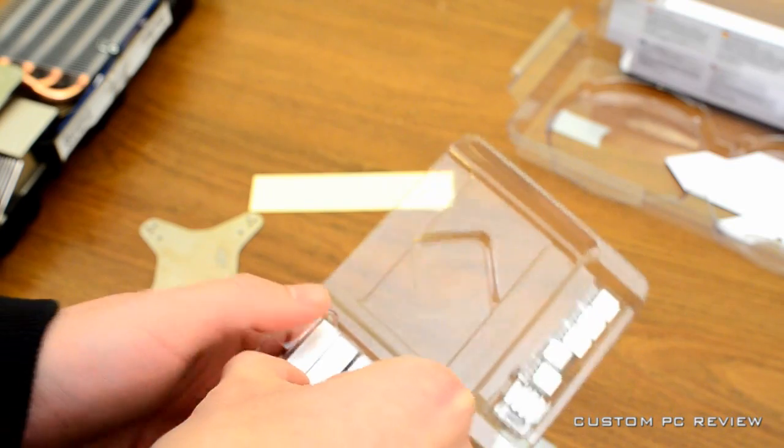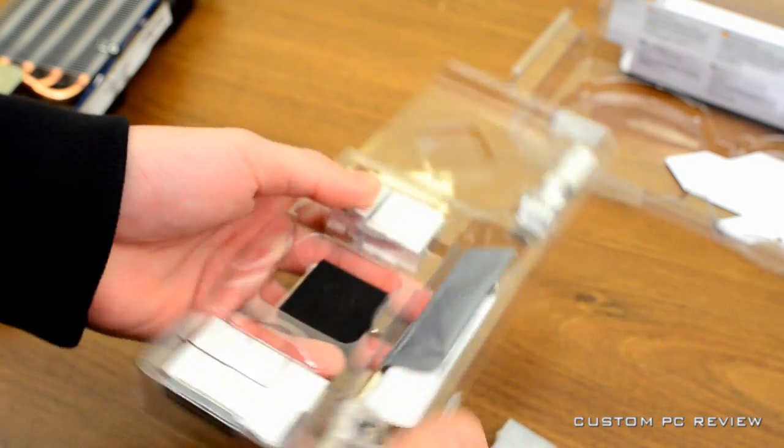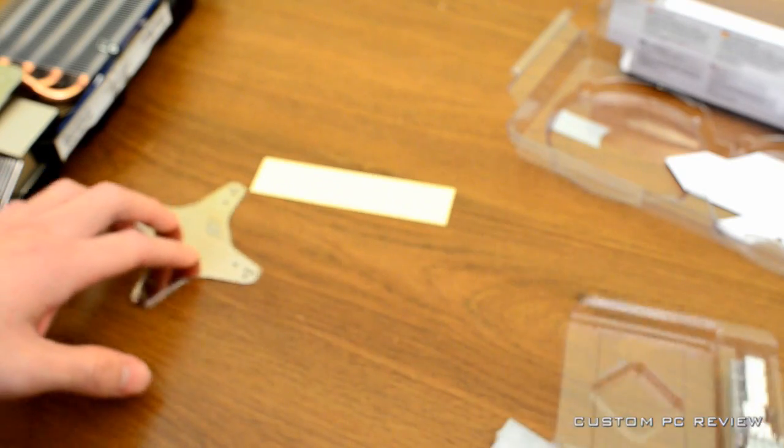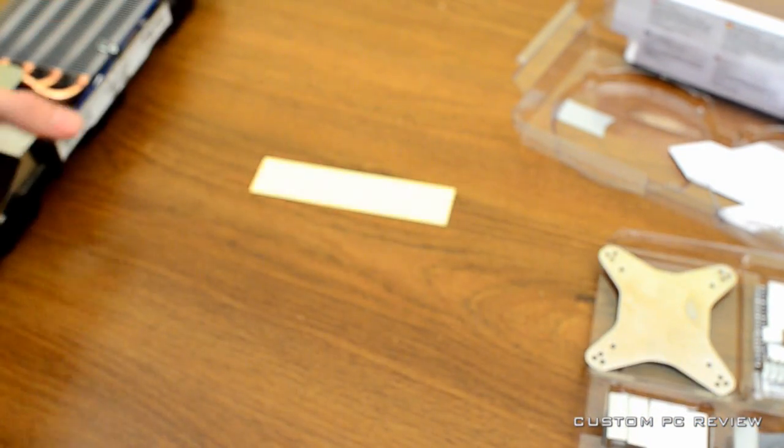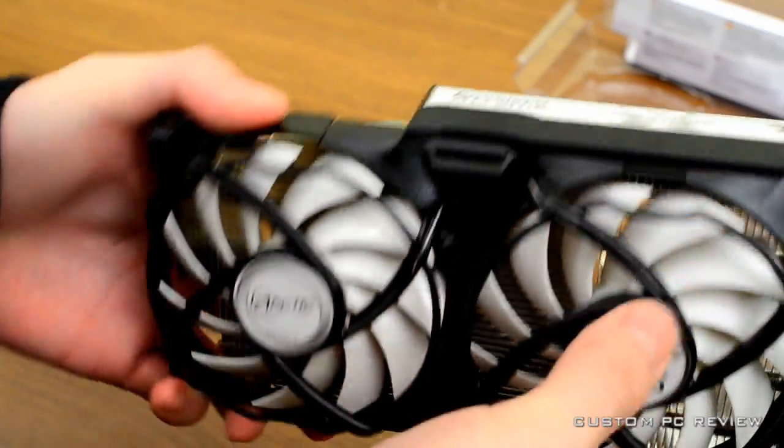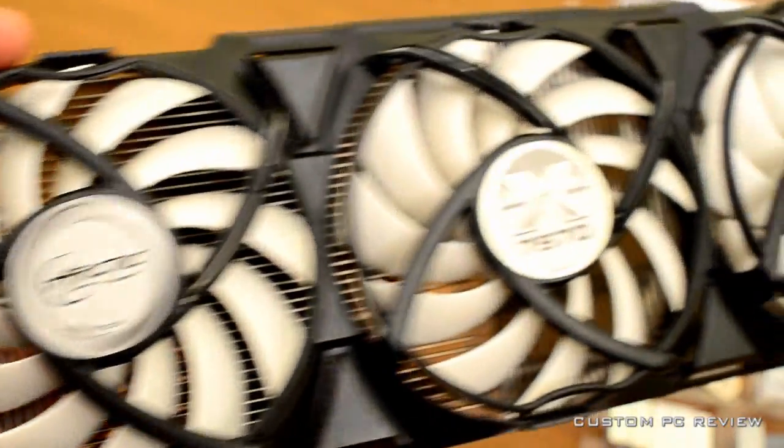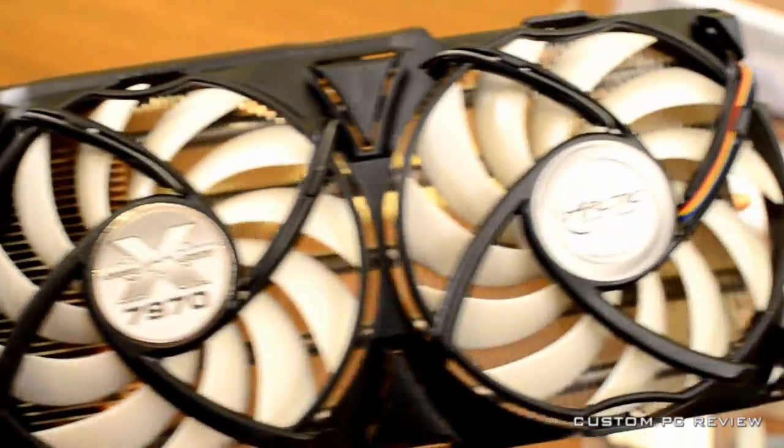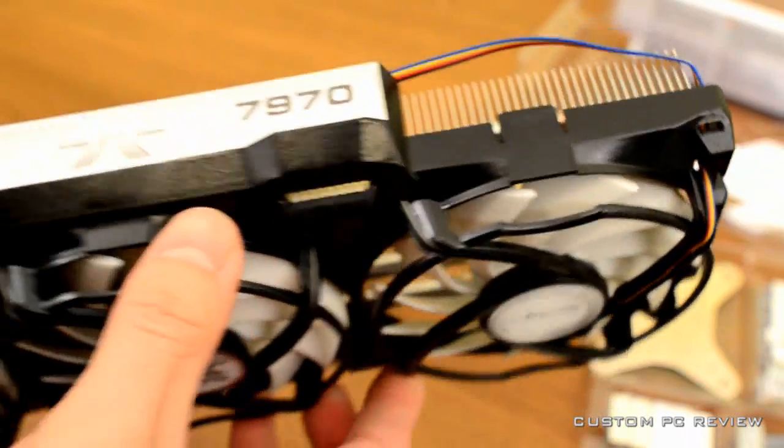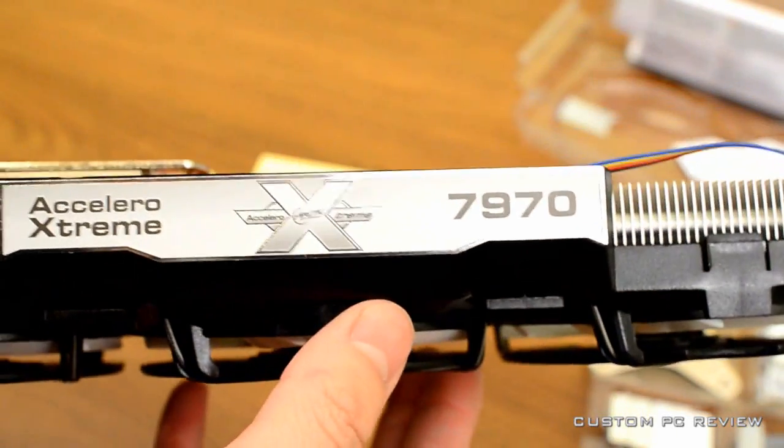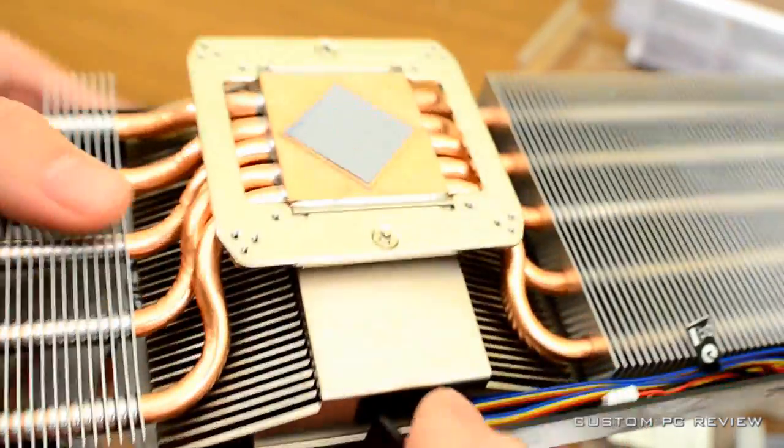So we'll try to take out some of the VRM coolers or heat sinks to show you guys and they kind of seem like they're stuck in there. So we'll put that aside for now and we'll kind of take a look at the actual heat sink itself. So we've got those three 92mm fans on there and pretty nice looking. They've got that white look to it. Accelero Xtreme 7970 right there.